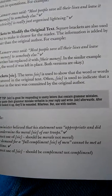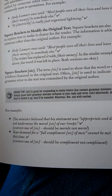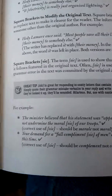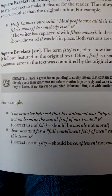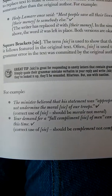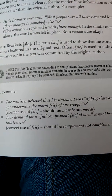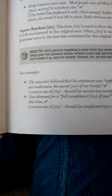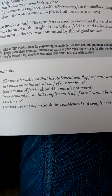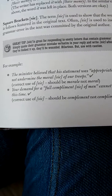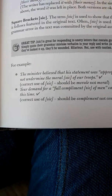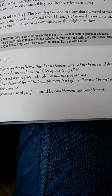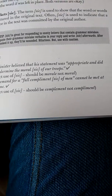Square brackets: [sic]. The term 'sic' is used to show that the word or words it follows featured in the original text. Often, sic is used to indicate that a grammar error in the text is committed by the original author. Sic is great for responding to snotty letters that contain grammar mistakes — simply quote their grammar mistake verbatim in your reply and write sic afterwards. After they've looked it up, they'll be wounded! For example: 'the minister believed that his statement was appropriate and did not undermine the moral [sic] of our troops' — correct use should be 'morale,' not 'moral.' Another example: 'your demand for a full compliment [sic] of men cannot be met at this time' — correct use should be 'complement,' not 'compliment.'